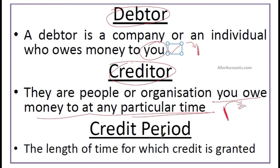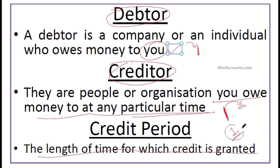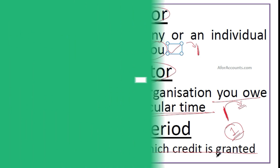And the last one is credit period — the length of time for which credit is granted. Yadi udhaar ek mahine ke liye diya gaya hai, ya credit ek mahine ke liye diya gaya hai, then the credit period would be of one month.